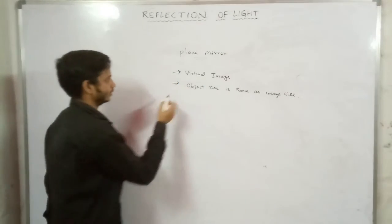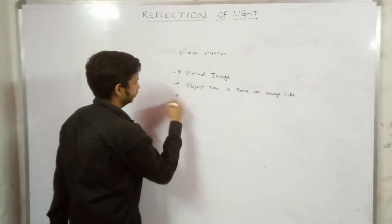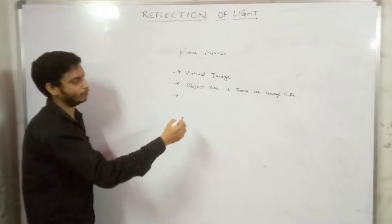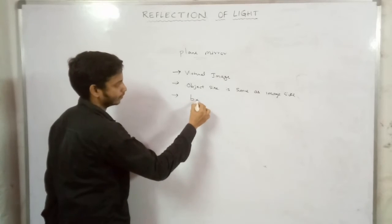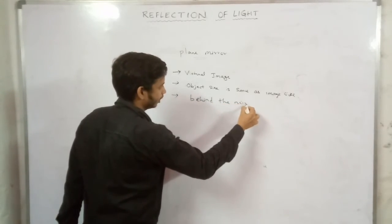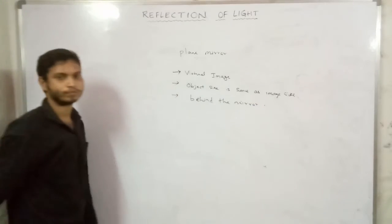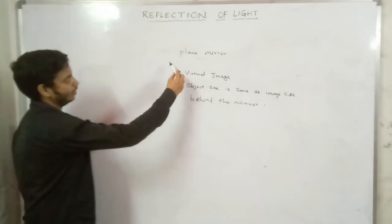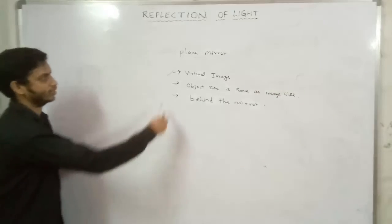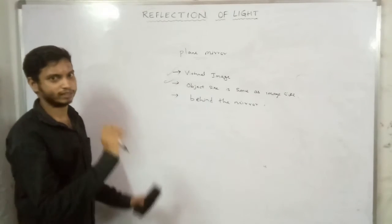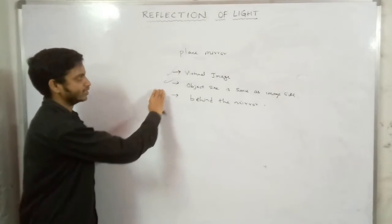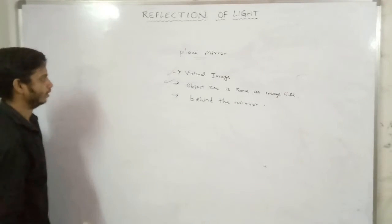The image formed in a plane mirror is virtual and is located behind the mirror. The object distance from the mirror and the image distance from the mirror are the same. So the object and image are at equal distances from the plane mirror.